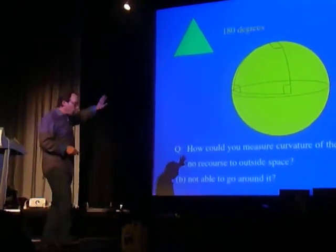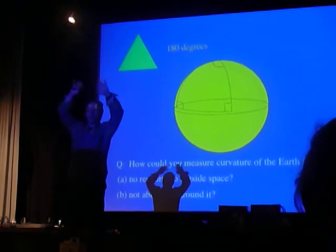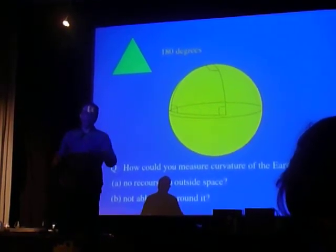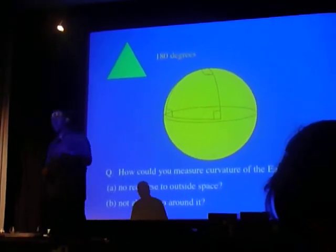Now it turns out, while this is true for a two-dimensional surface, the same thing is true for the three-dimensional universe in which we live. If we could find a big enough triangle and measure the sum of the angles, we could measure the curvature of the universe. And we've been able to find a big enough triangle by the greatest and most important observation of cosmology in a long time.